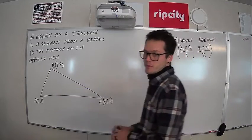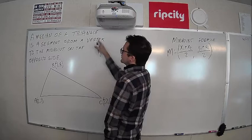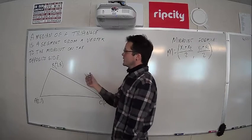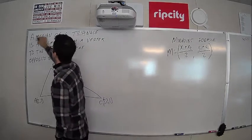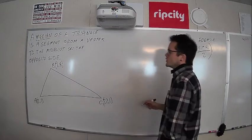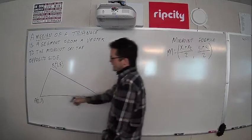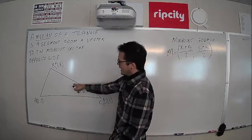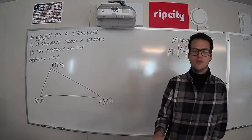Okay, here we go. Definition time. A median of a triangle is a segment from a vertex to the midpoint on the opposite side. So again, keyword here is median. We're going to connect a vertex to the midpoint on the opposite side for this triangle. We're going to find all three of them.